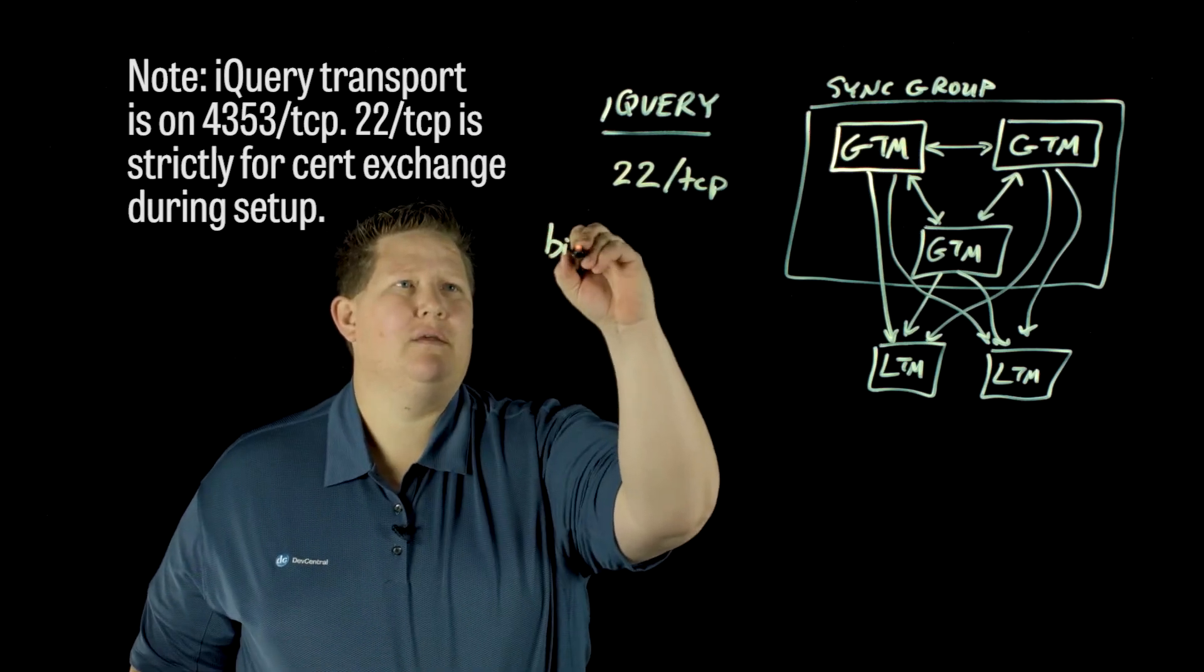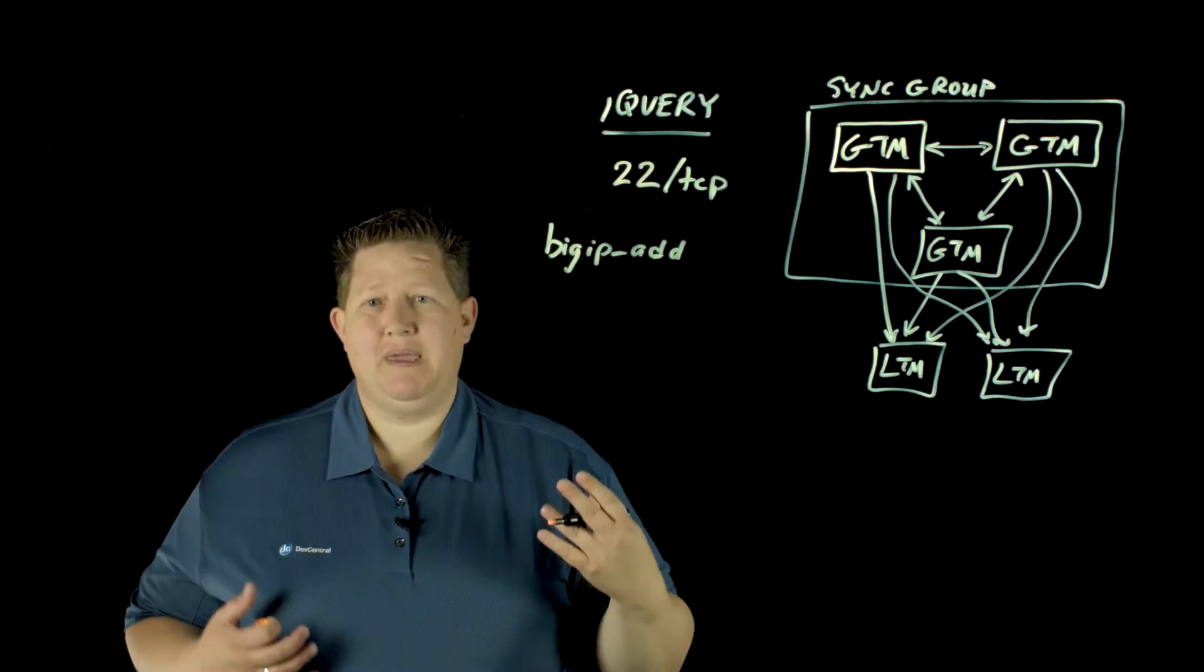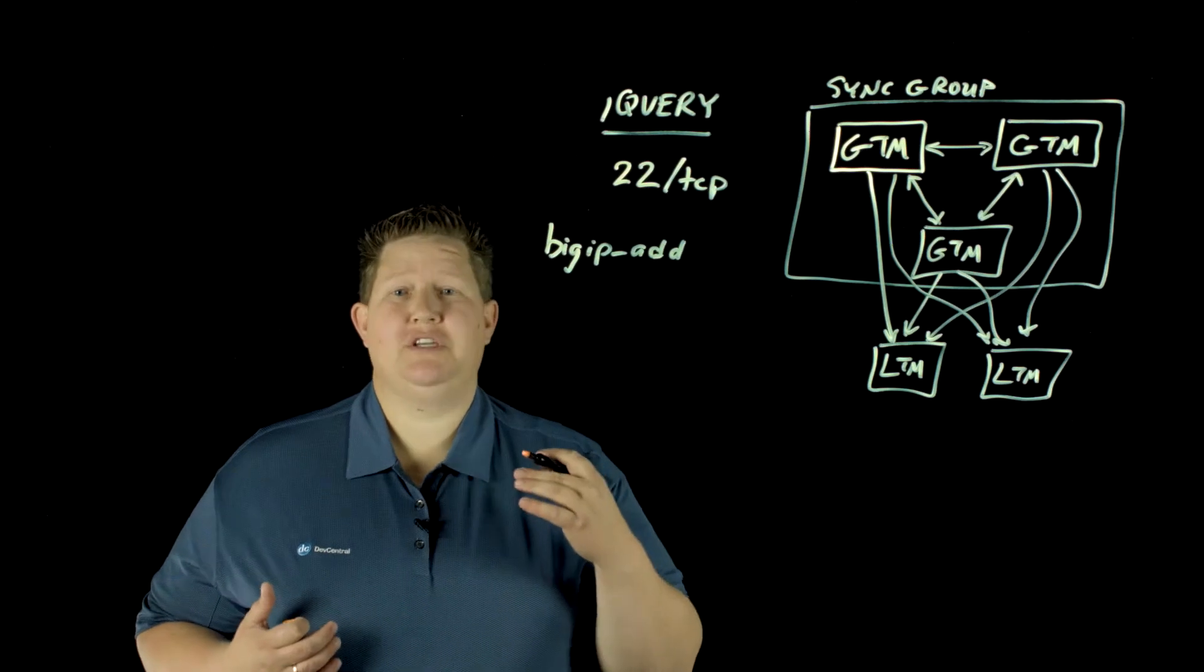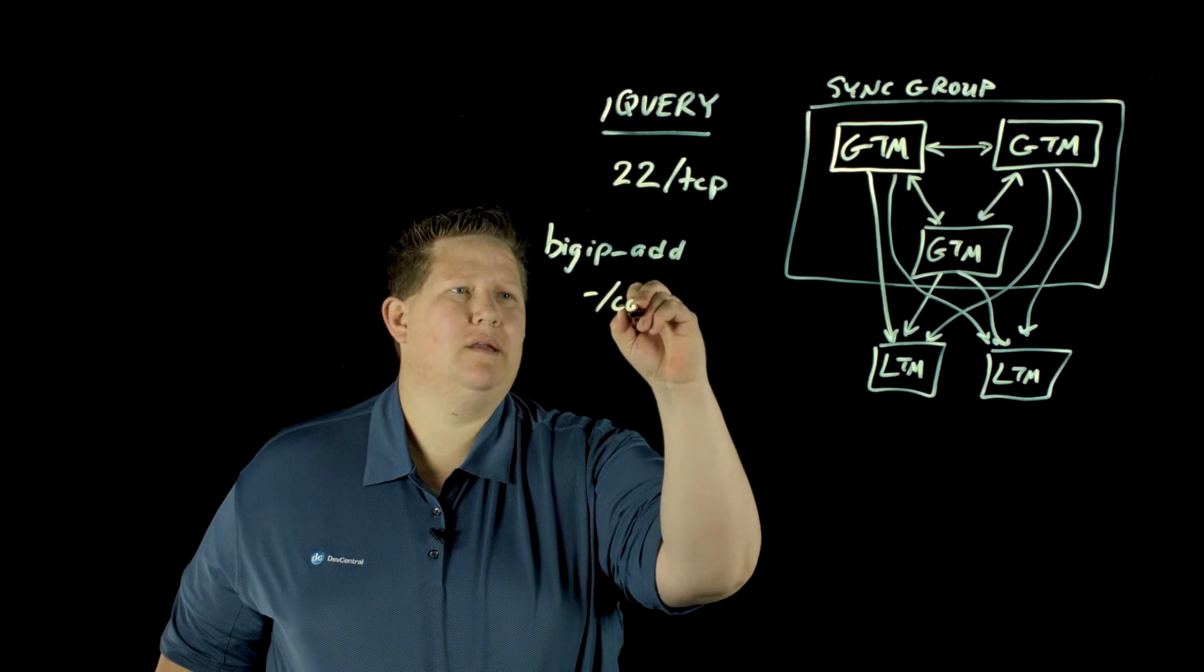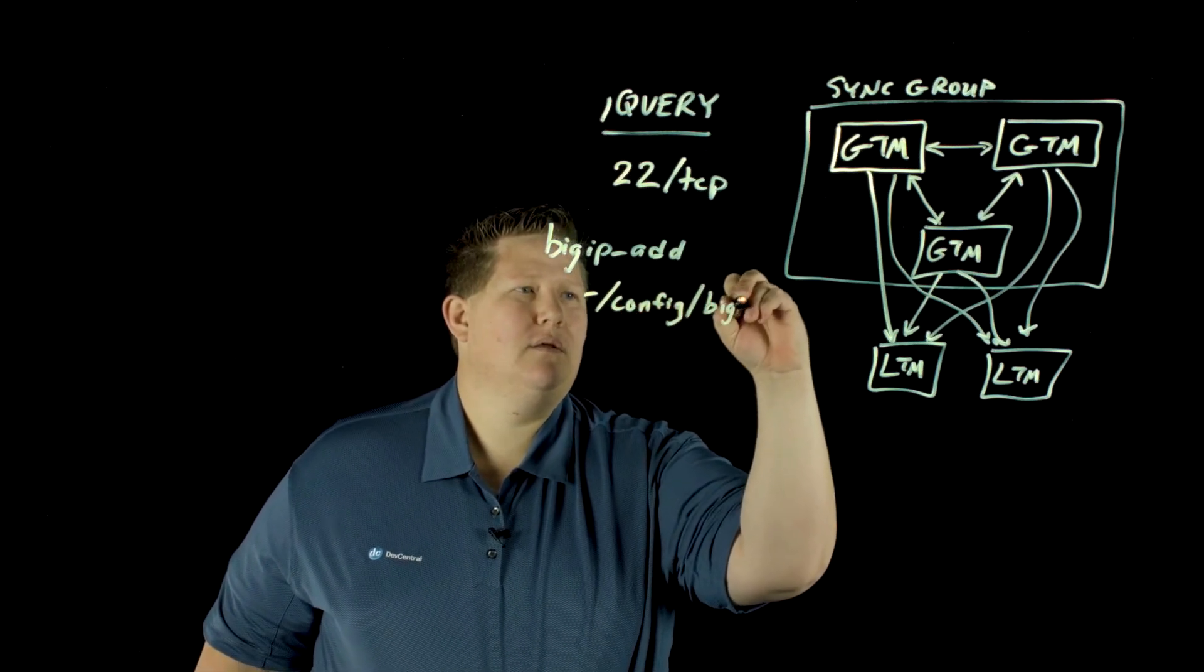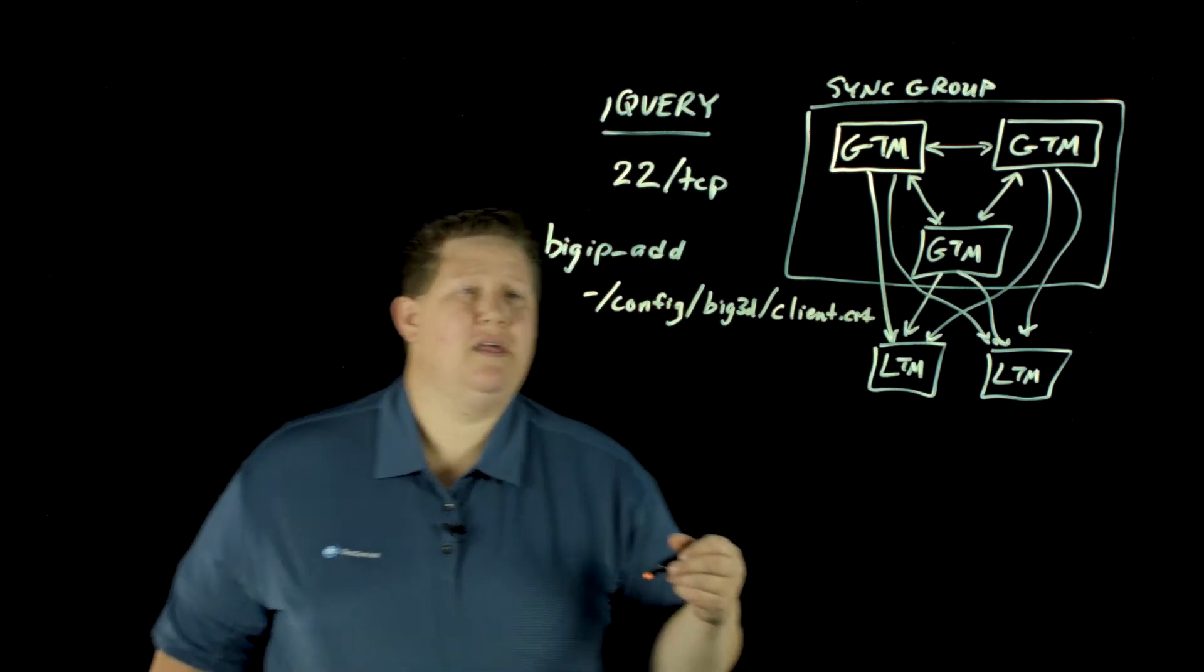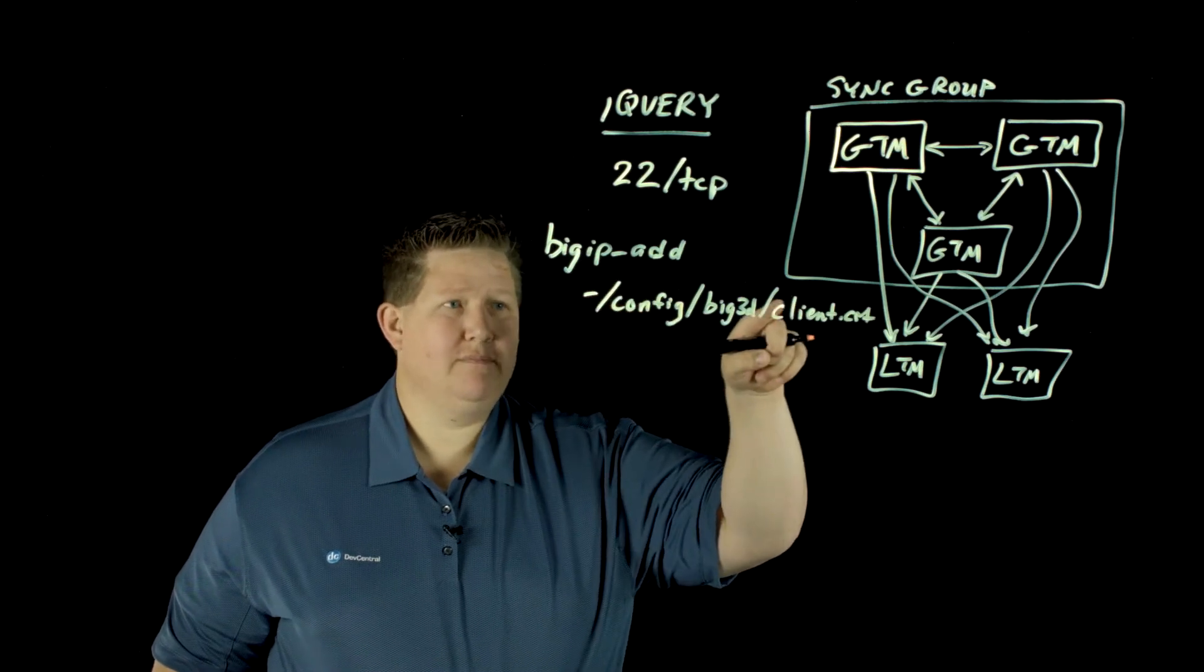And that's done with the bigip-add command. What bigip-add does is it exchanges certs between GTMs or GTMs and other BigIP systems. It does that by it appends the local GTM cert to a remote LTM authenticated certs. And that's done in config big3d and that's client.cert.